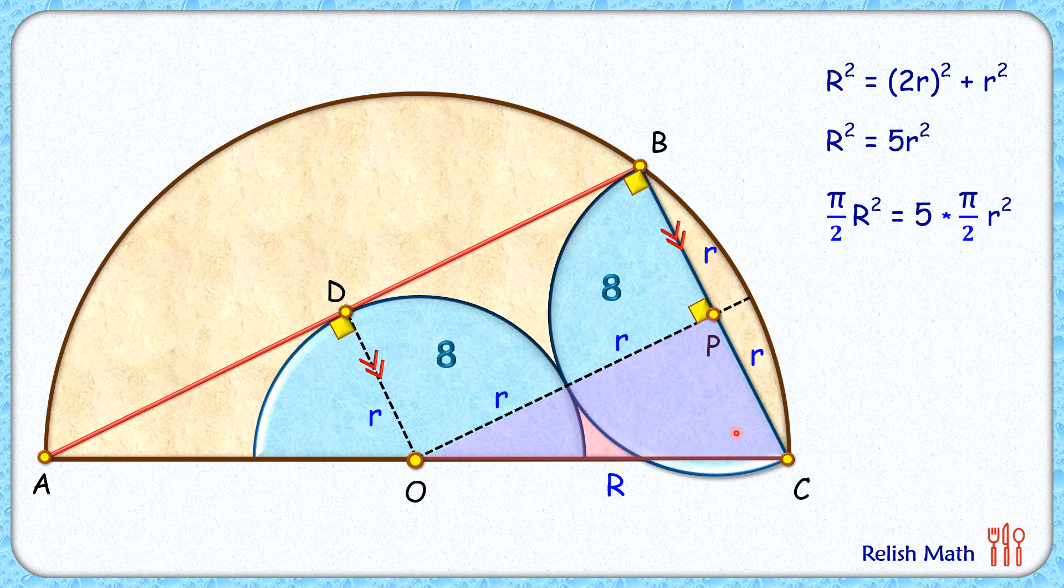And the area of this blue semicircle is given in the question as 8 cm². And this (πR²)/2 is the area of this brown semicircle, which we have to find.